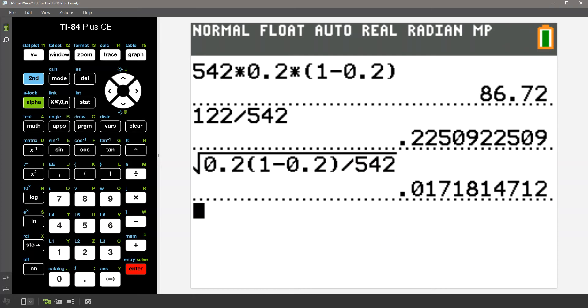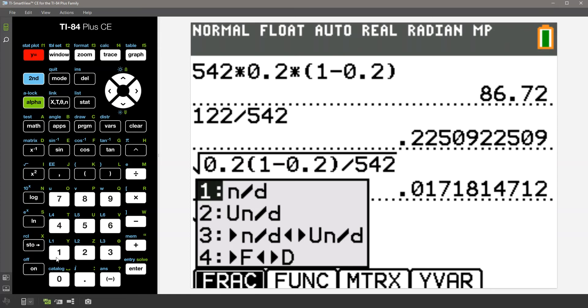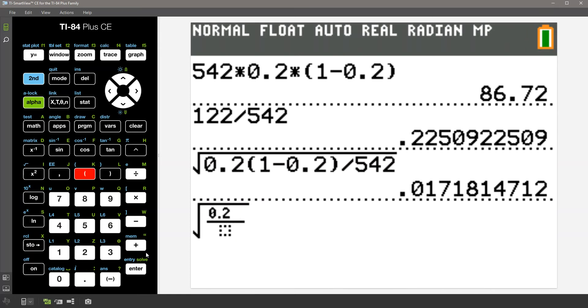You could also use the fraction underneath the square root if you so desire. If I hit second square root, then hitting alpha F1, you want number 1, which is numerator over denominator, and then it looks like this.